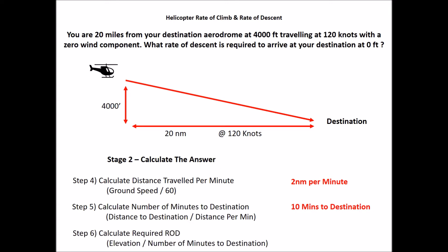Step six, calculate the required rate of descent: elevation divided by number of minutes to destination — 4000 feet divided by 10 minutes gives us a descent of 400 feet per minute required.